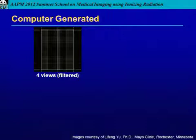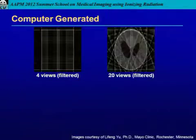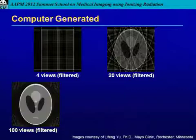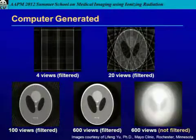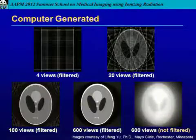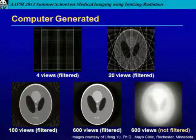This is a bit clearer because it was generated by computer. You can see four views, 20 views — obviously a different object, not our triangle — then 100 views filtered, 600 views filtered, and 600 views not filtered. So you can see the inherent blurriness caused by skipping the filter.